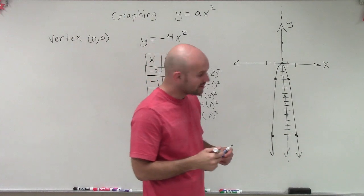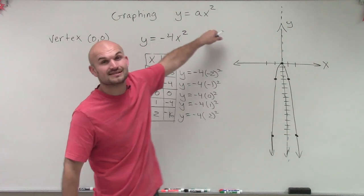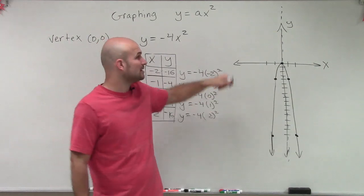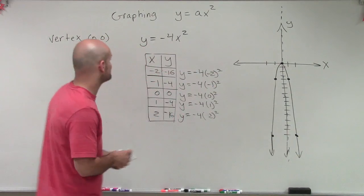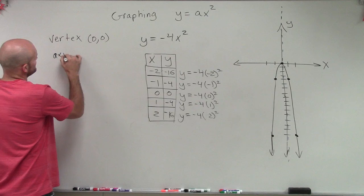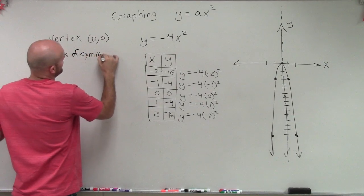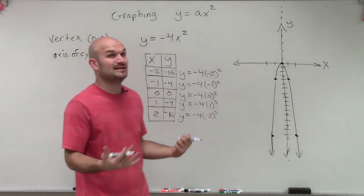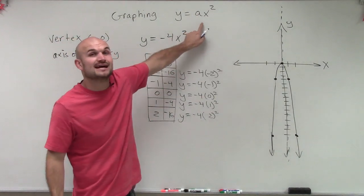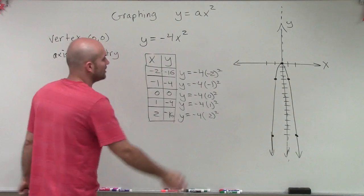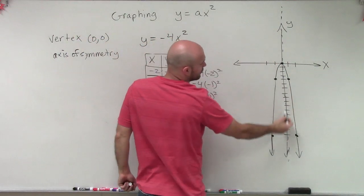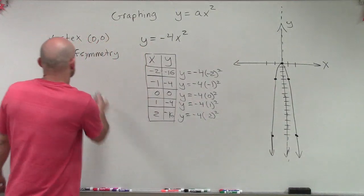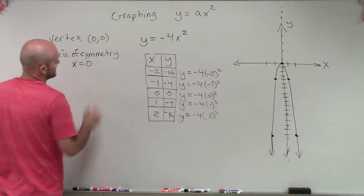And one thing for us to notice is, whenever we have a graph that's in this form y equals ax squared, our vertex, either if it's a maximum or a minimum, will always be at our 0, 0. Then we have an axis of symmetry. And if you remember, I told you at the beginning our axis of symmetry is going to be at 0. It's going to be at x equals 0 just because I knew that it was in this format. Well, and that's also the case. You can see that when x equals 0, that's the line that splits our graph in half. So our axis of symmetry is x equals 0.